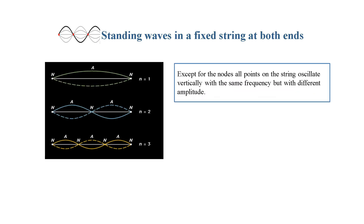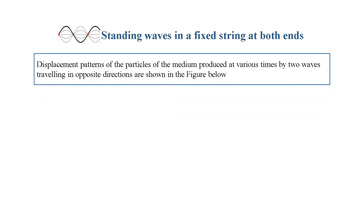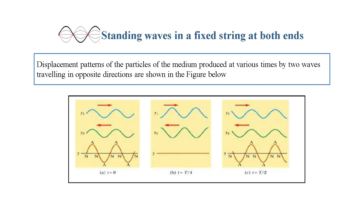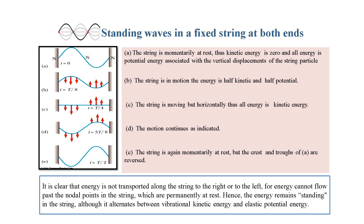Except for the nodes, all points on the string oscillate vertically with the same frequency but with different amplitude. Oscillating strings often vibrate so rapidly that the eye perceives a blur whose shape is that of the envelope of the motion. Displacement patterns of the particles produced at various times by two waves travelling in opposite directions are shown in the figure. Energy is not transported along the string, as it cannot flow past the nodal points which are permanently at rest. Hence, the energy remains standing in the string, alternating between vibrational kinetic energy and elastic potential energy.